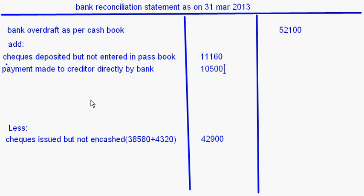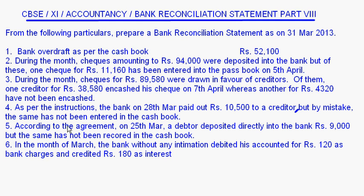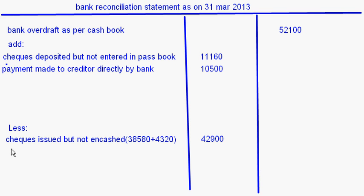According to the agreement, on 25th March a debtor deposited rupees 9,000 directly into the bank, but the same has not been recorded in the cash book. The bank will credit that money, so the overdraft balance as per the passbook comes down. Whereas in the cash book it is more. So this should be deducted: payment made by debtor directly into bank — 9,000.